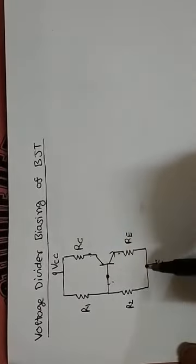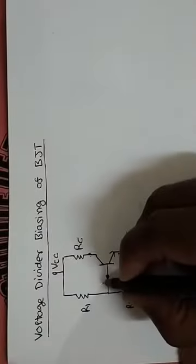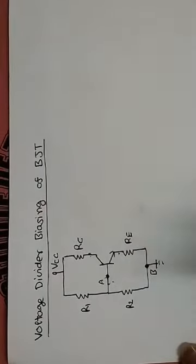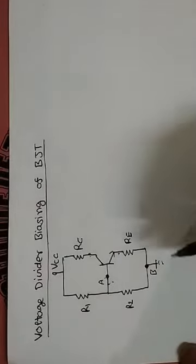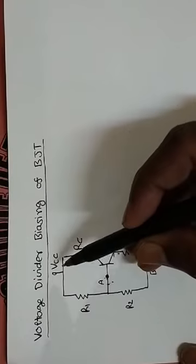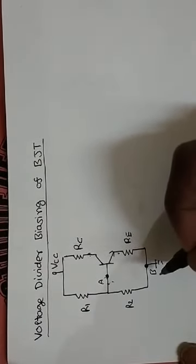इस circuit की analysis के लिए हम base और ground के across Thevenin equivalent circuit बनाते हैं. Points A और B लेते हैं, A और B के across Thevenin equivalent circuit बनाना है. According to Thevenin theorem, जिन terminals के across हमें Thevenin circuit बनाना होता है, उस terminal से जो element connect होता है उसको हम remove कर देते हैं. Means हम यह transistor को remove कर देंगे — यह पूरा section ही remove कर देंगे.